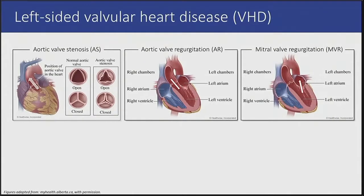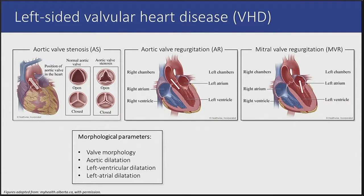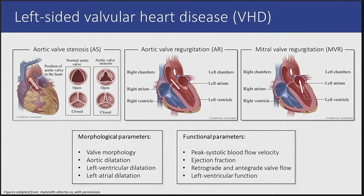The most common types of left-sided valvular heart disease, or VHD, in the Western world are aortic valve stenosis, aortic valve regurgitation, and mitral valve regurgitation. These diseases can be evaluated based on morphological and functional parameters. Currently, echocardiography is the first-line diagnostic tool used for this type of disease.